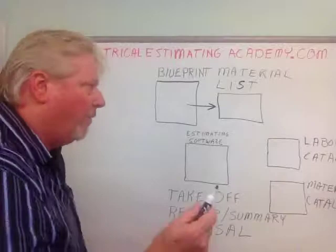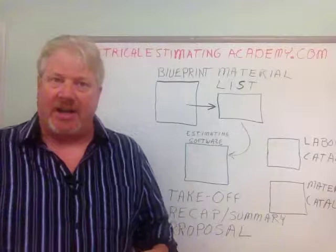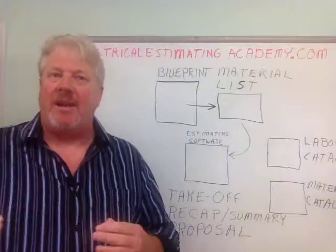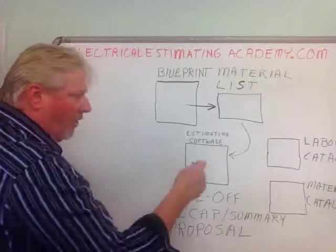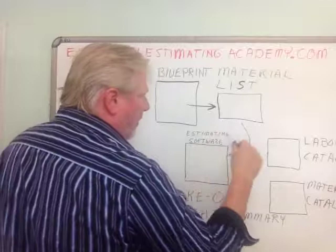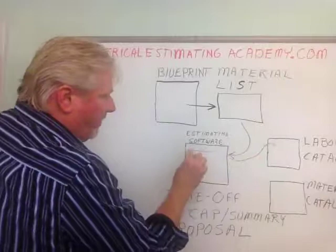You write that down and then when you're done with that process, what you do is you input that material into the estimating software. What the estimating software does is it pulls material prices in for what you've input and it pulls in labor. The way it does that — the estimating software has a labor catalog. So when you input a 20 amp receptacle on your software, the program goes to the labor catalog, finds the 20 amp receptacle and inputs it on your takeoff. It inputs the labor for the receptacle from the labor catalog.